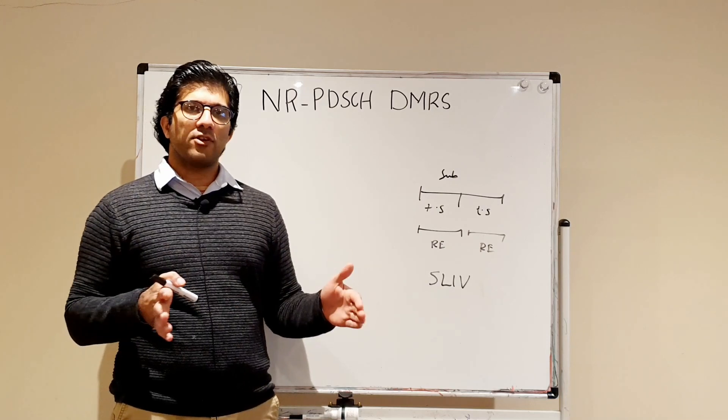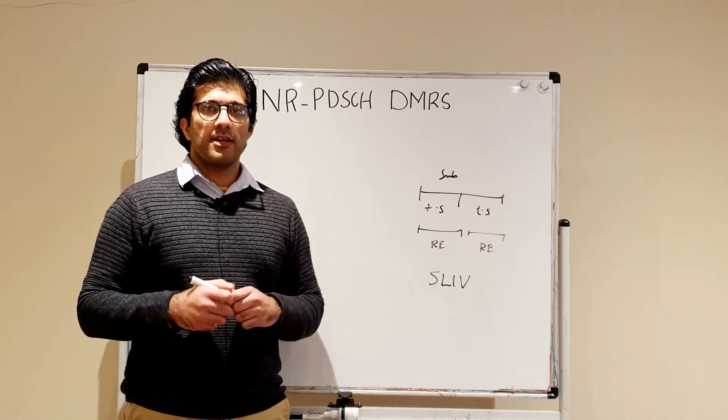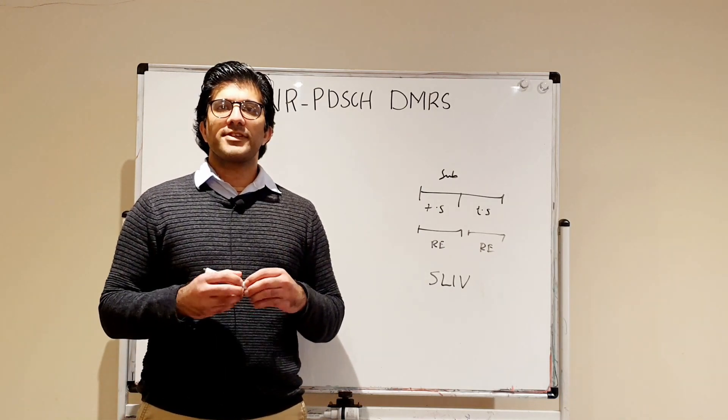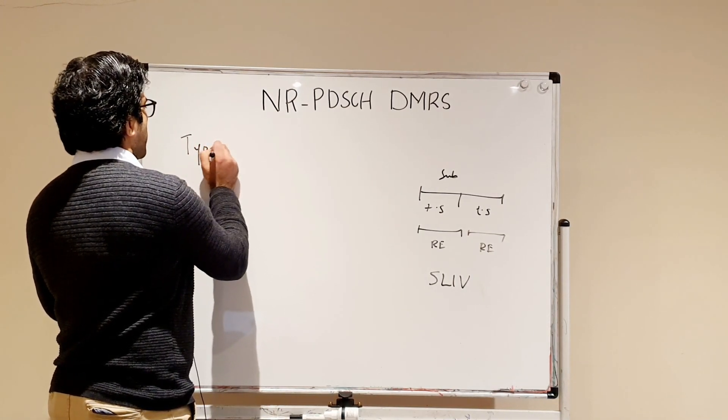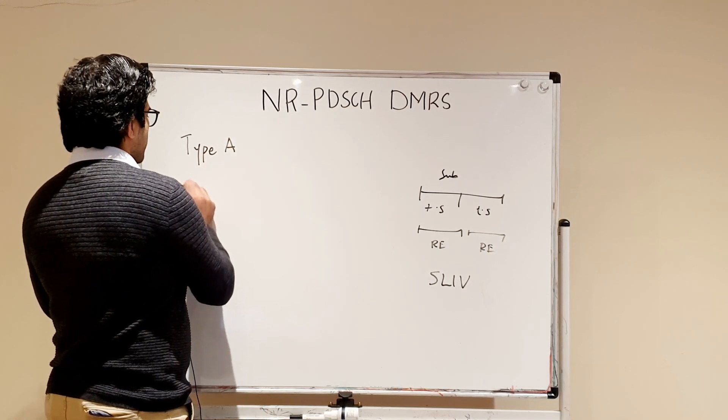Coming back to the demodulation reference signal, there are two types: one is Type A and the other is Type B.